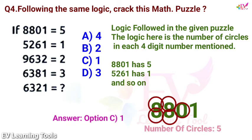...is the number of circles in each four-digit number mentioned. 8801 has five circles, 5261 has one circle, and so on.